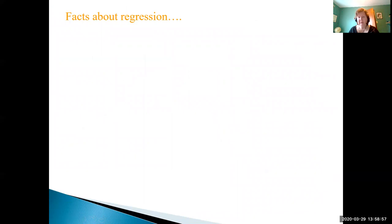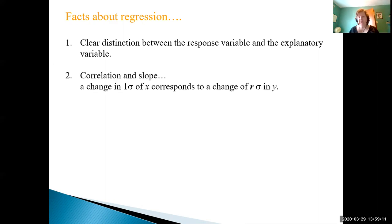Different facts that we have about regression. Well we have to remember we have to decide right up front which is the response and which is the explanatory because depending on which ones we pick we're going to get a different slope and a different intercept. Change in correlation and slope. A change in one sigma so one standard deviation of x corresponds to a change of r sigma and y. The least squares regression line passes through the value x bar y bar so that's always a point on our line.